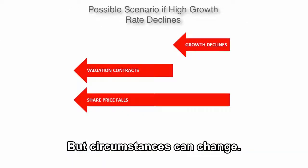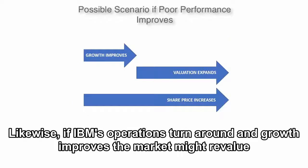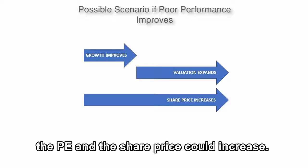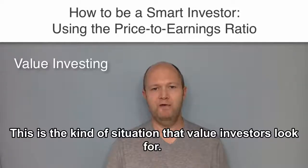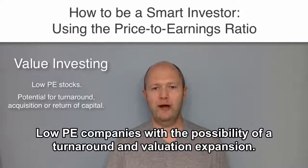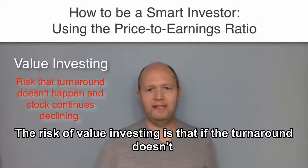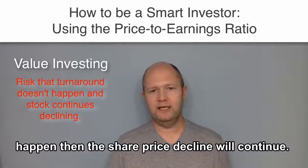But circumstances can change. If Microsoft's growth rate declines, the market will likely revalue the stock. Likewise, if IBM's operations turn around and growth improves, the market might revalue the PE and the share price could increase. This is the kind of situation that value investors look for — low PE companies with the possibility of a turnaround and valuation expansion. The risk of value investing is that if the turnaround doesn't happen, then the share price decline will continue.